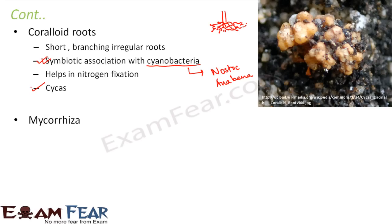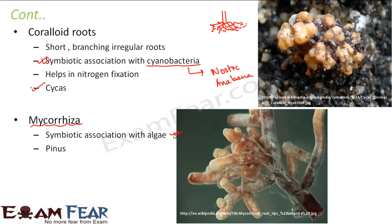Some gymnosperms also exist as mycorrhiza — a symbiotic association of the roots of gymnosperms with algae. This is seen in pine. Here is an enlarged view of the roots of a pine tree showing this symbiotic association with algae.